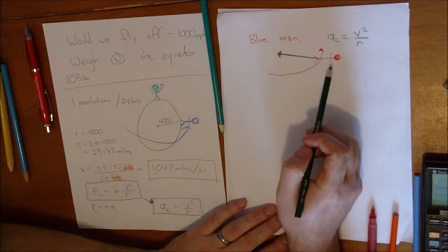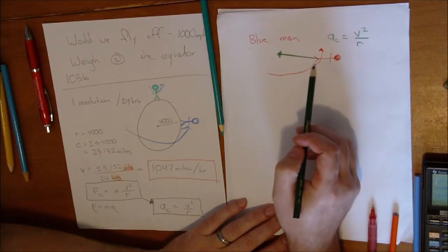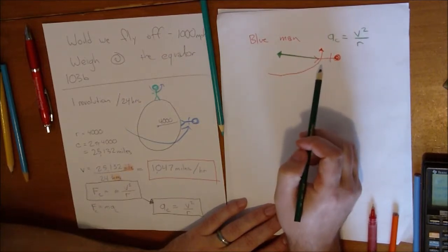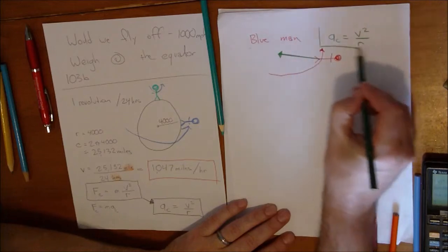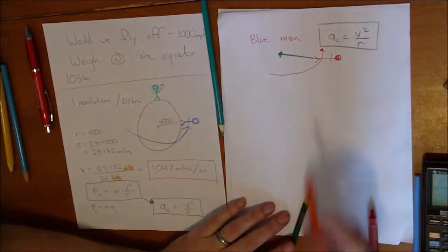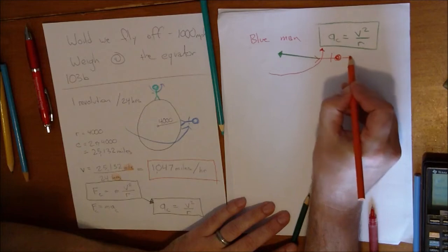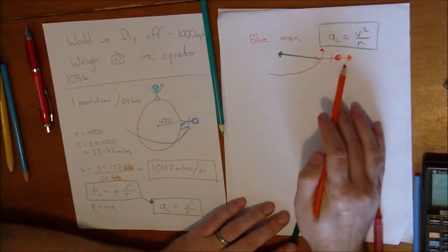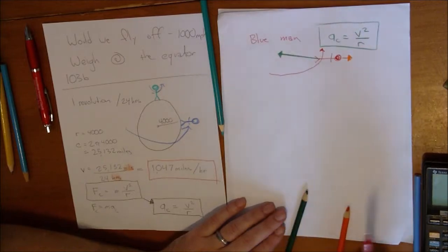There is no rope pulling him to the earth. So it is the absence of the rope. It is the absence of the rope that makes it seem like he might fly off. This orange vector is smaller than the green one. That's correct.